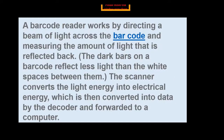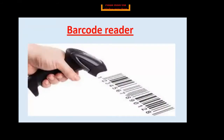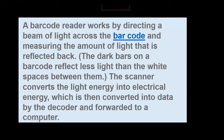A barcode reader works by directing a beam of light across the barcode. It measures the amount of light that is reflected back. The dark bars on a barcode reflect less light than the white spaces between them. The scanner converts the light energy into electrical energy, which is then converted into data by decoders and forwarded to the computer.